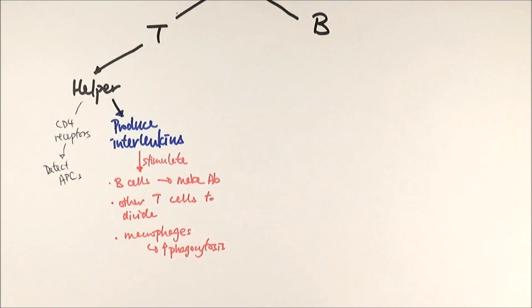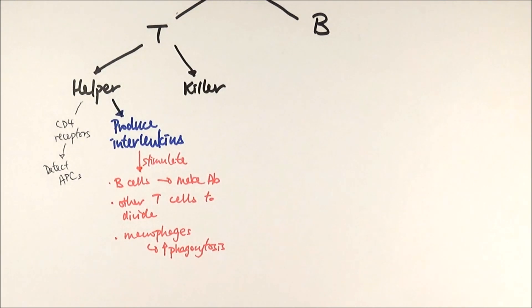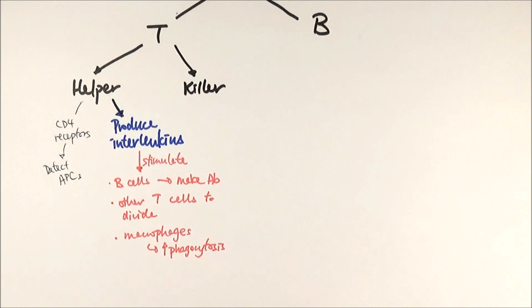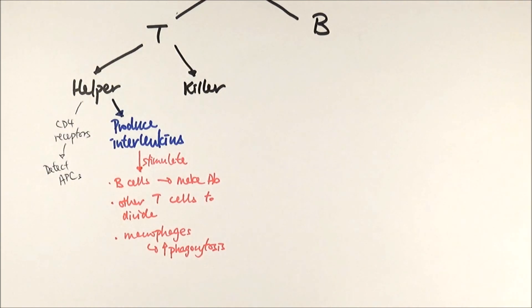Apart from T helper cells, lymphocytes can also differentiate into T killer cells. T killer cells, as the name implies, kill the pathogen. They do this by releasing a chemical called perforin, which punches holes in the pathogen's cell surface membrane, essentially disintegrating them.